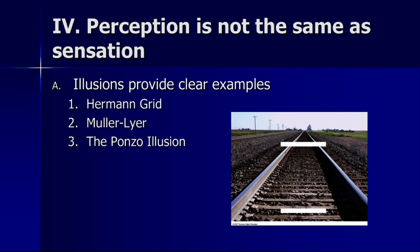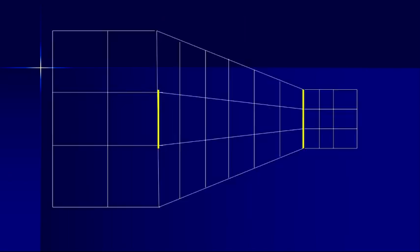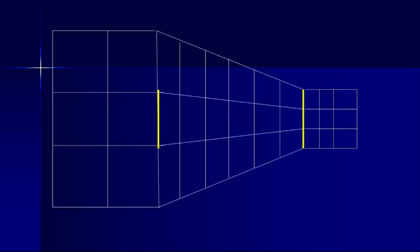The Ponzo illusion is another example based on our experiences and our understanding of depth, linear perspective, size, and distance. The two lines you see in front of you are the exact same length, but they look different because our experience tells us that in order for them to appear the same size on our retina — the same visual angle — one must be much bigger because it appears to be further away. What's remarkable is you can remove that illusion and then reinstate it just as easily, and instantly it comes back.